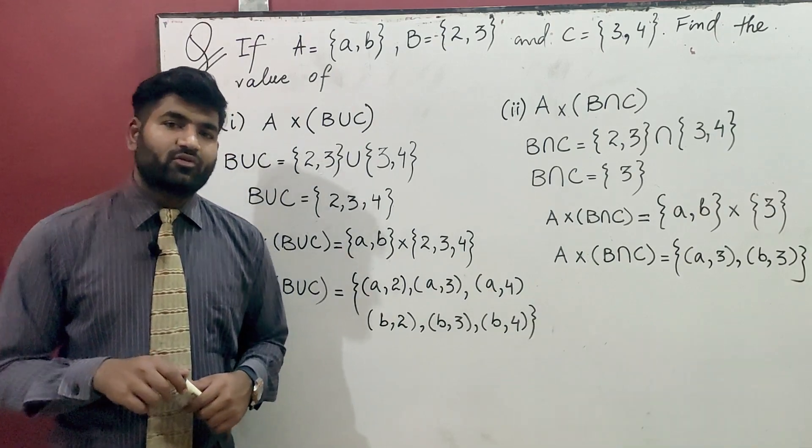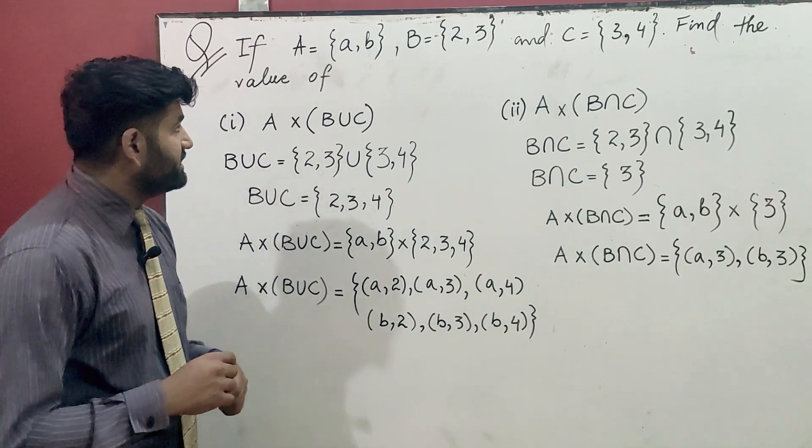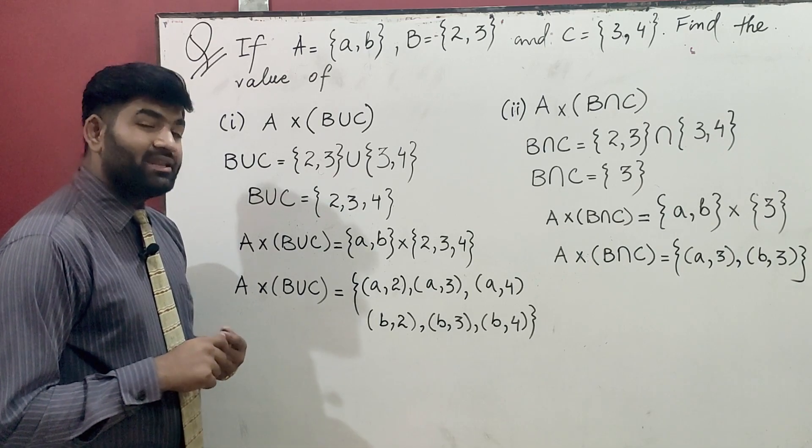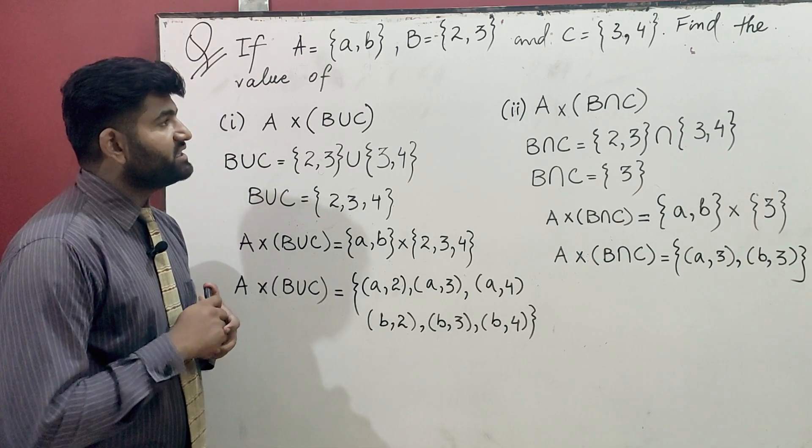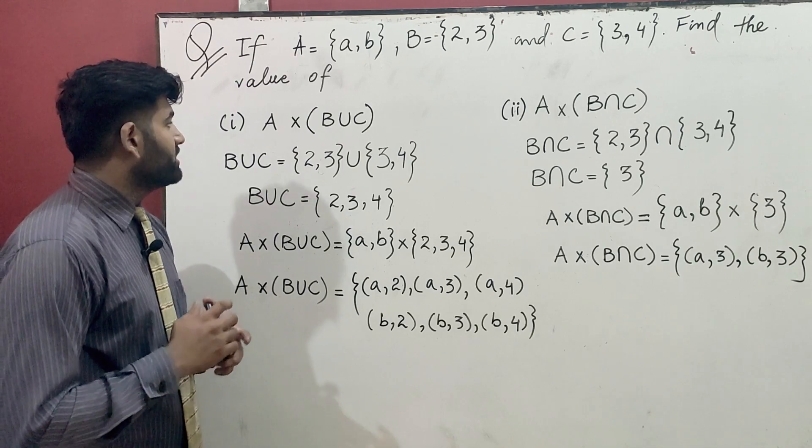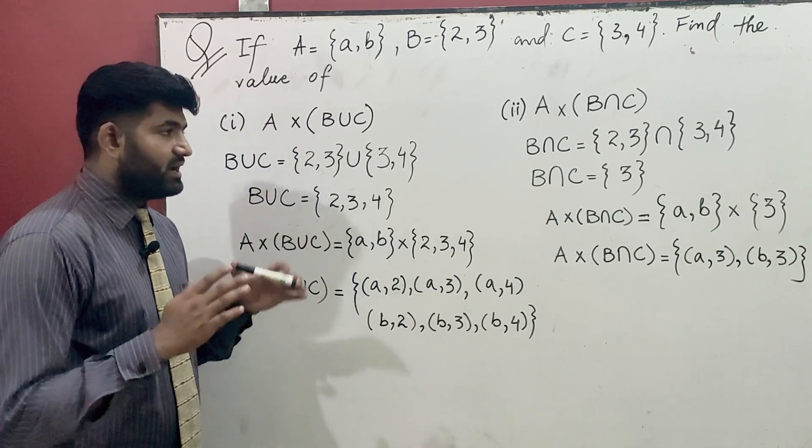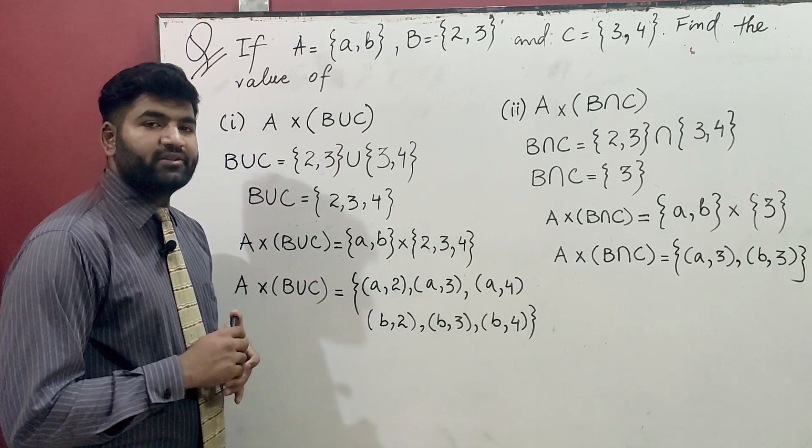Today we will discuss a question from past papers which says that if we have set A which is equal to A, B; B is equal to 2, 3; and C is equal to 3, 4; then find the value of A multiplied by B union C and A multiplied by B intersection C.